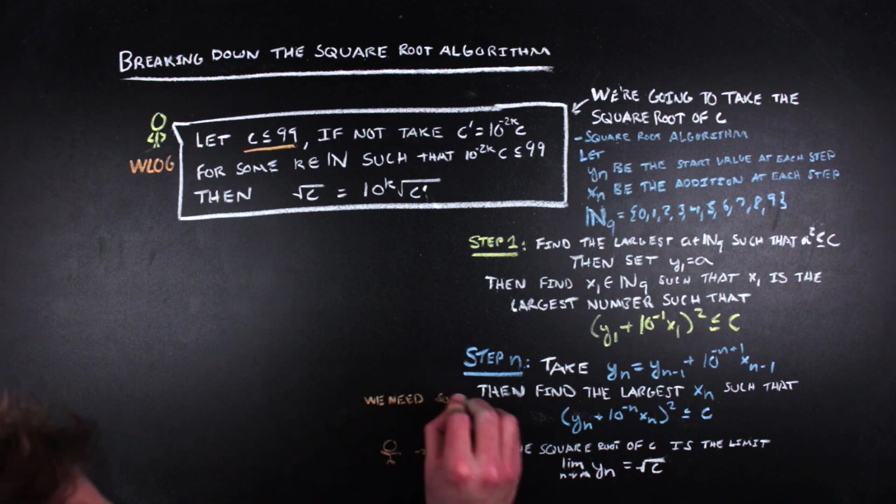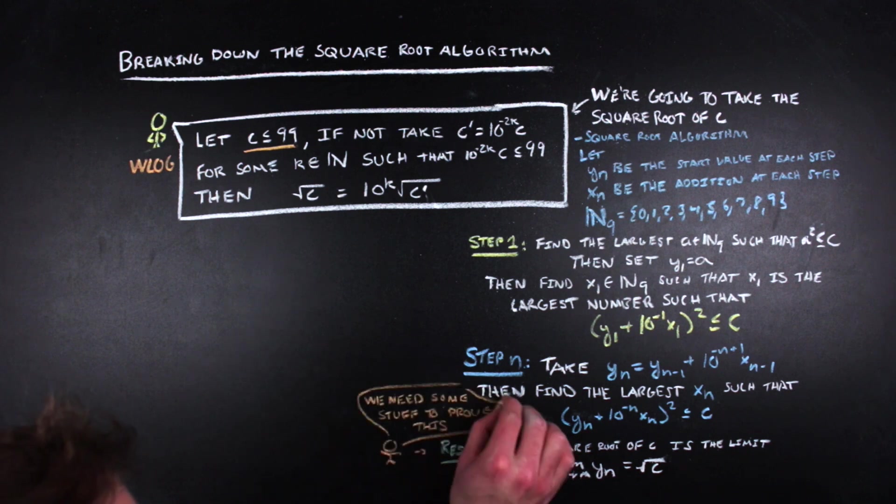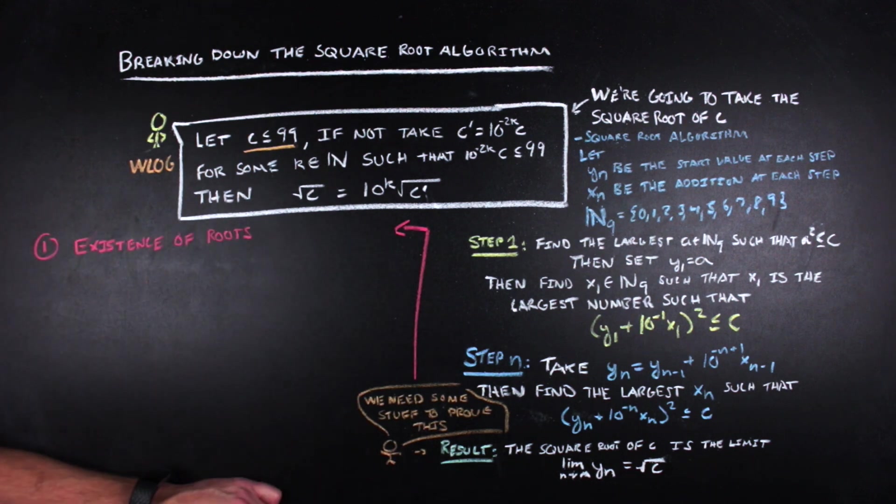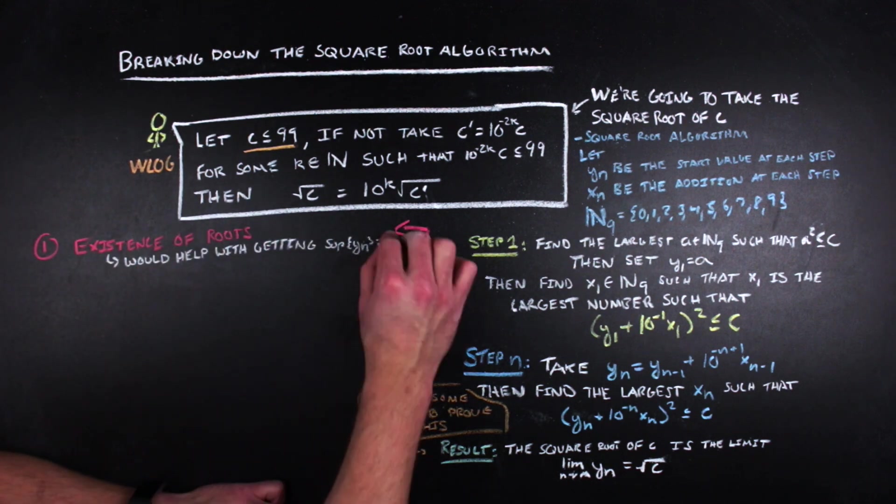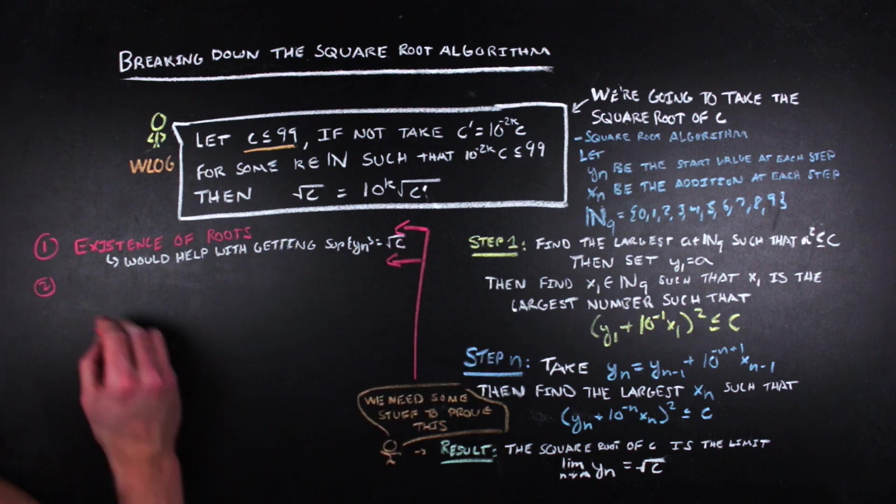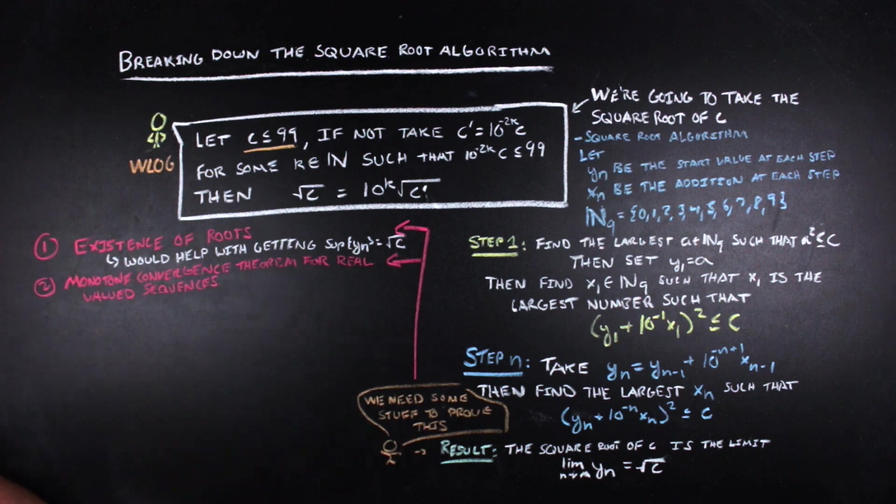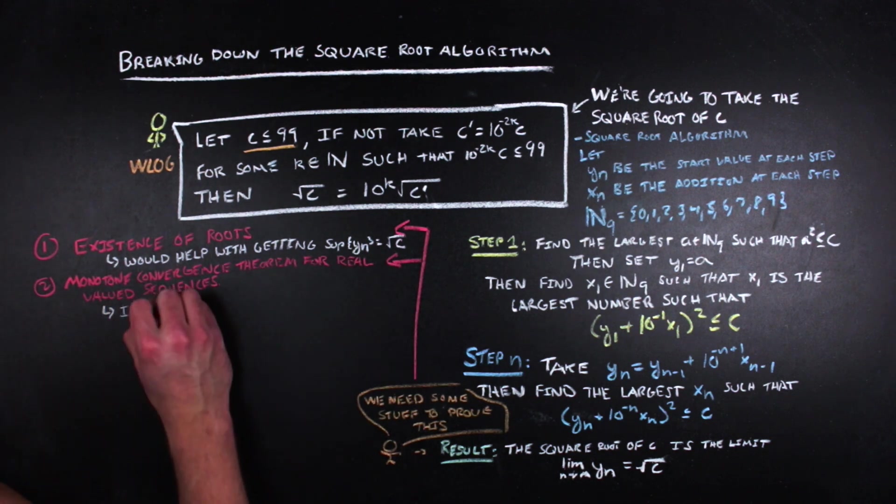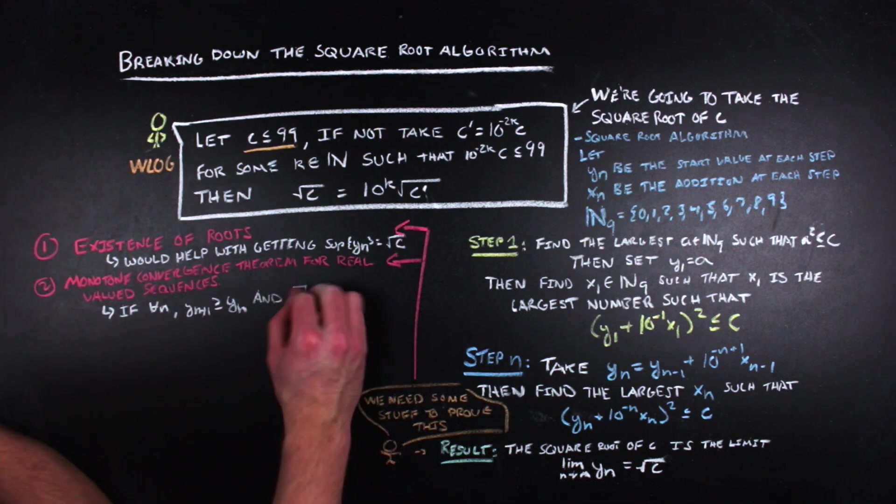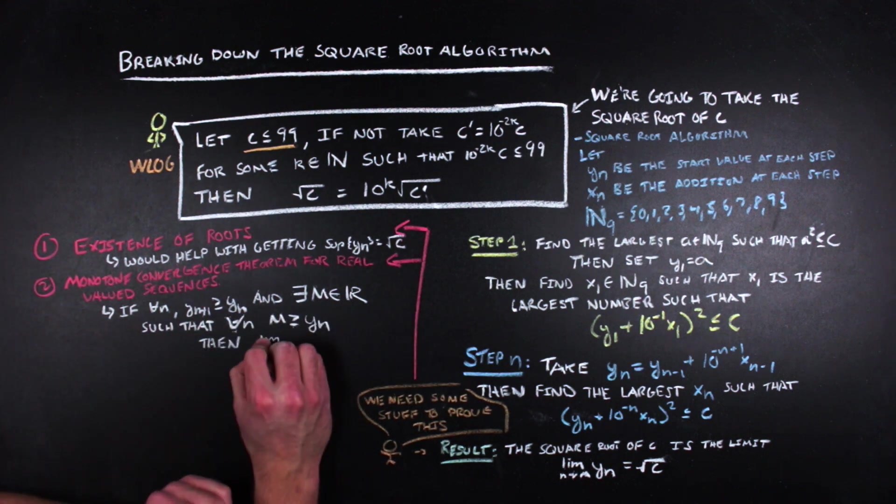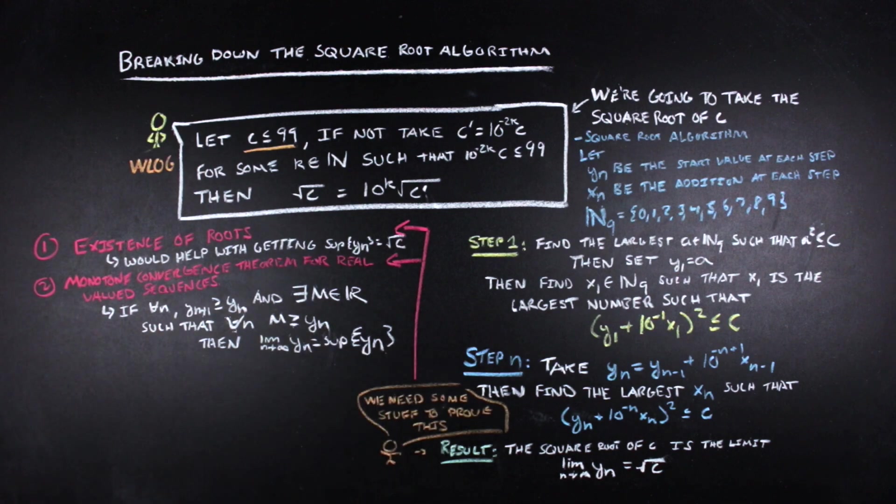That proof is dependent on two things: the proof of the existence of roots, which uses some introductory analysis and gives us a supremum we would need to complete the proof, and the monotone convergence theorem for real number sequences. I'm not going to prove those today, but the monotone convergence theorem for real number sequences says that if a sequence is strictly increasing and bounded above, then the sequence converges to the supremum of the sequence. And if you don't know what a supremum is, it's just the least upper bound.